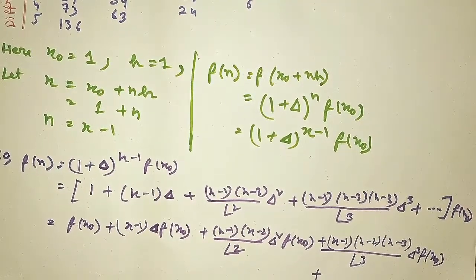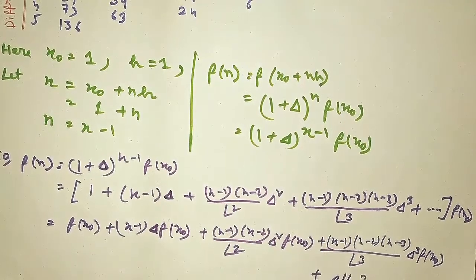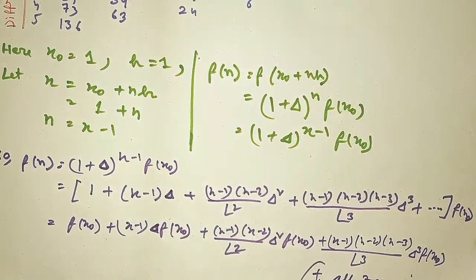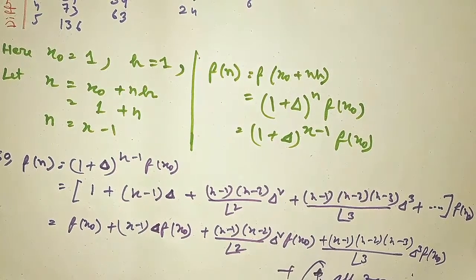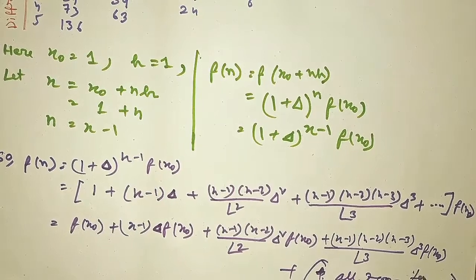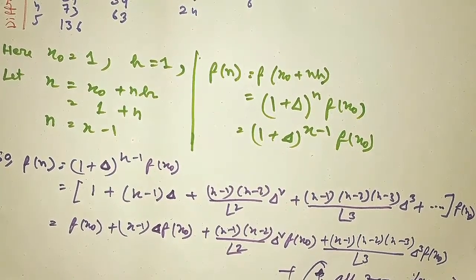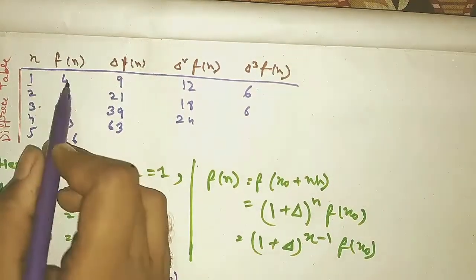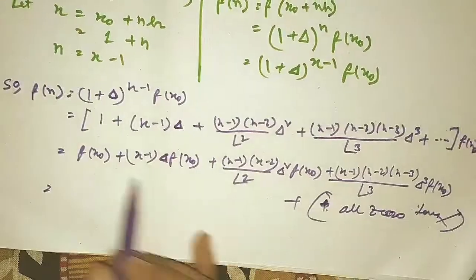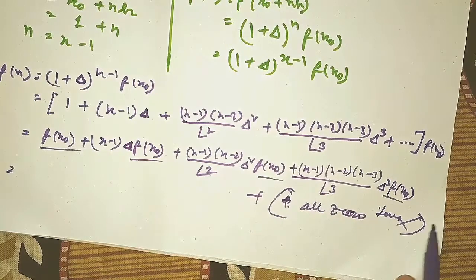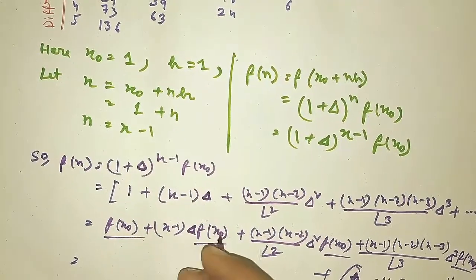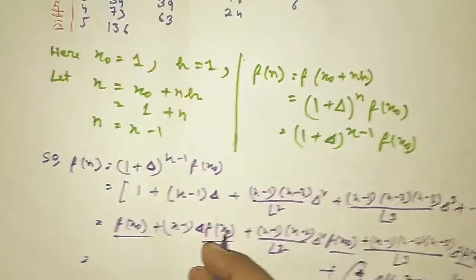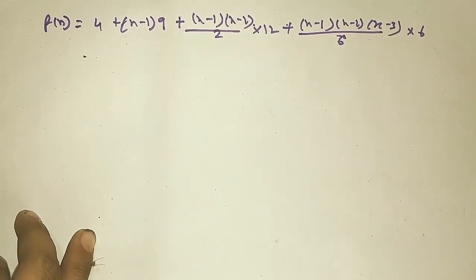All remaining terms beyond Δ³ are zero because Δ⁴f(X₀), Δ⁵f(X₀), and so on are all zero. Looking at the finite difference table, it goes up to Δ³f(X), so we only take terms up to Δ³f(X₀) and ignore the rest.